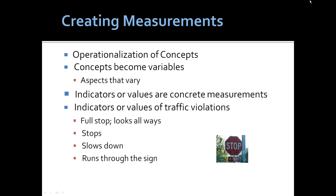Indicators or values on variables are the concrete actual measurements. For example, gender — male or female — or age, such as 10 or 15 years of age. Indicators or values of traffic violations might be full stop, looks both ways, stops, slows down, or completely runs through the traffic sign.